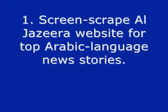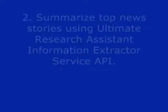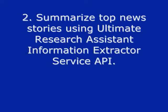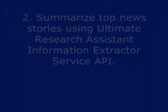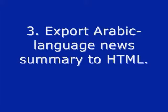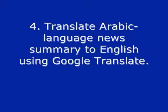This program is going to do four things essentially. First, it's going to screen scrape the Al Jazeera homepage for the top Arabic language news stories of the day. Then it's going to summarize the top news stories using the Ultimate Research Assistant information extractor API. The third step is to export the summarized news stories to HTML. The fourth step is to translate the news summary using the Google Translate service at google.com/translate so we can see what it looks like in English.